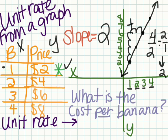If we want to use this graph to answer the question, what is the cost per banana, we could do two different things. We could look at one banana and find out what the cost is. And the cost here is two. So we could do it that way. One banana costs two dollars. Or, we can use the slope.